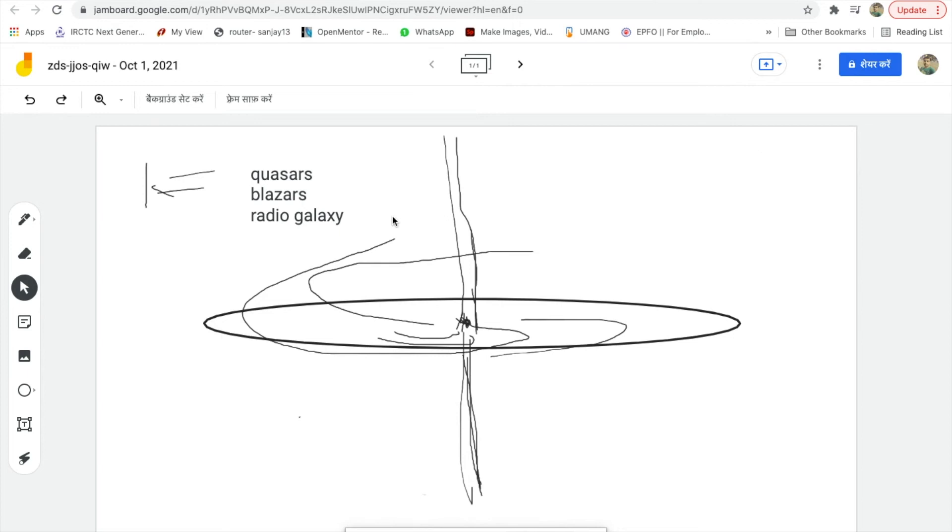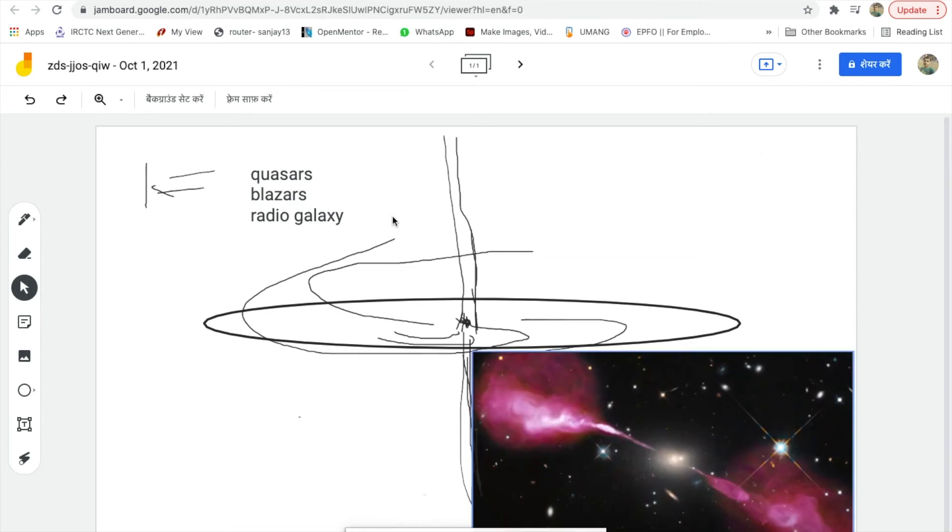If you talk about radio galaxies, they are projected perpendicularly - you can see right here in the image. Whereas if you talk about a quasar, they are pointed at a certain angle like this. And if we talk about blazars, they are projected towards us like this. These perspectives are making a difference among them.